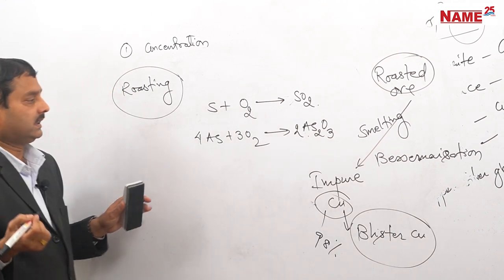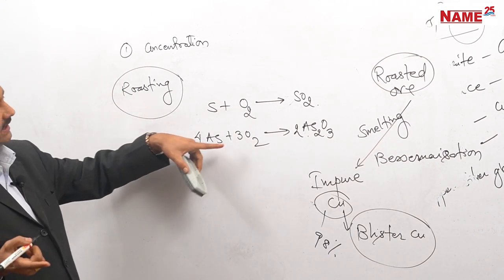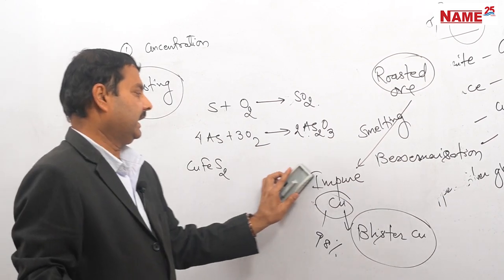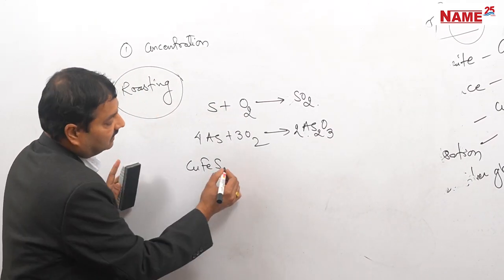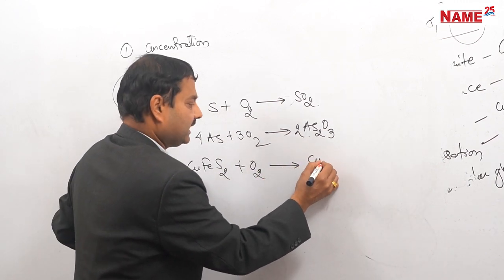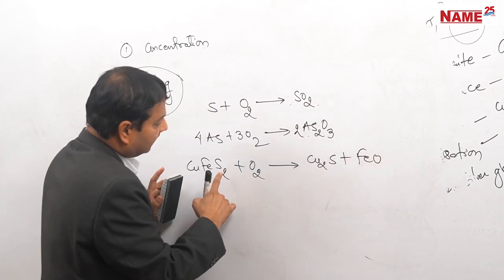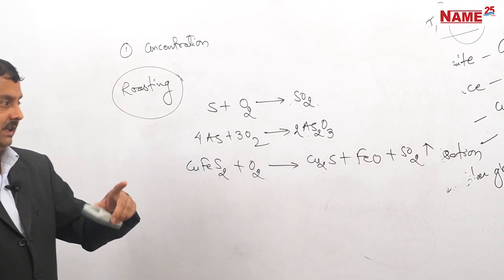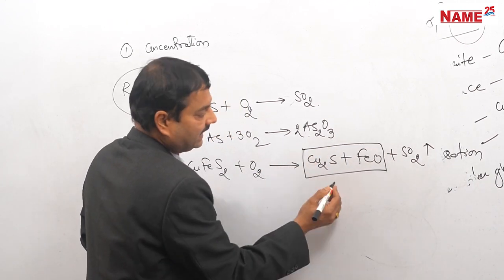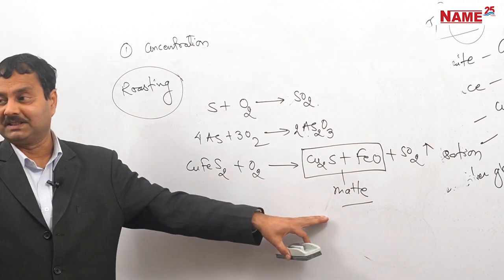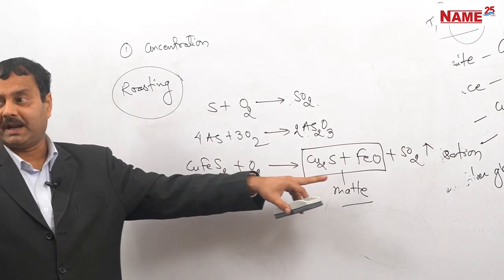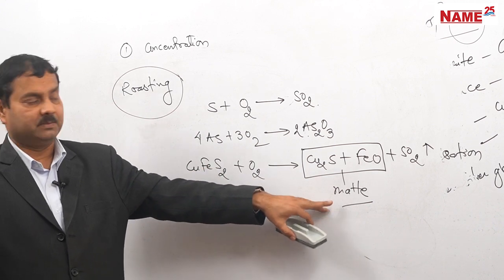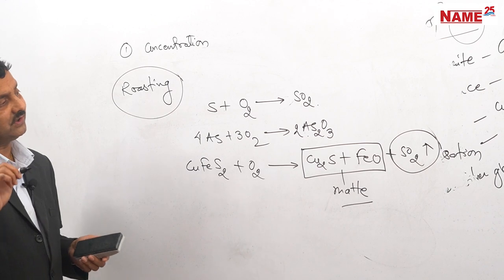During roasting, copper pyrite CuFeS₂ is heated with oxygen. The sulfur is oxidized to sulfur dioxide which is removed as a gas, and arsenic impurities are also oxidized and removed. The mixture remaining after roasting — cuprous sulfide and iron sulfide — is called matte.